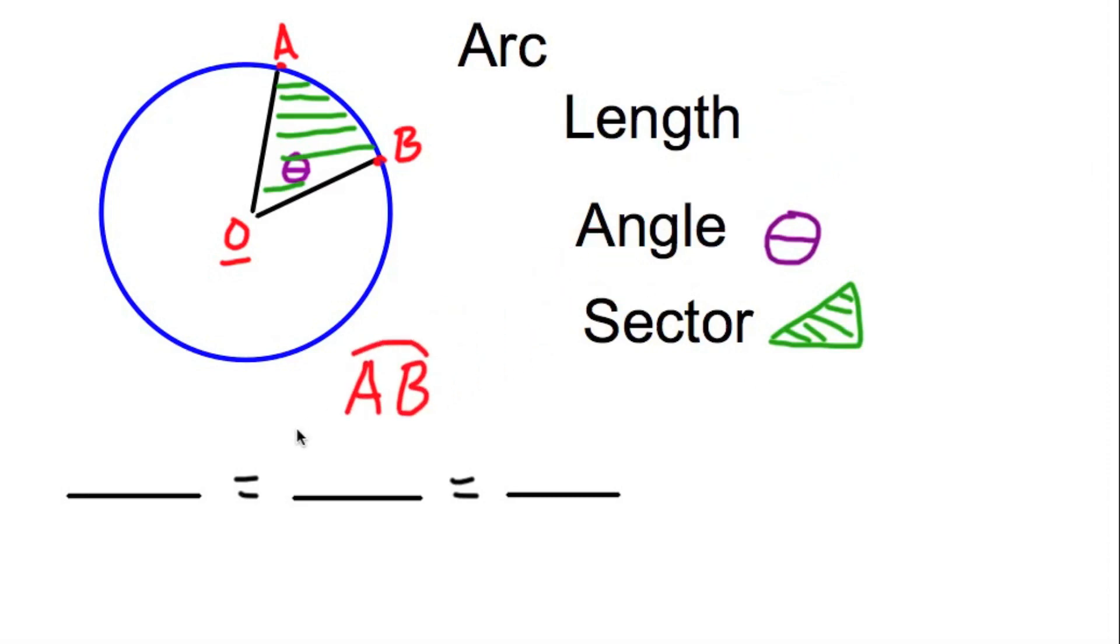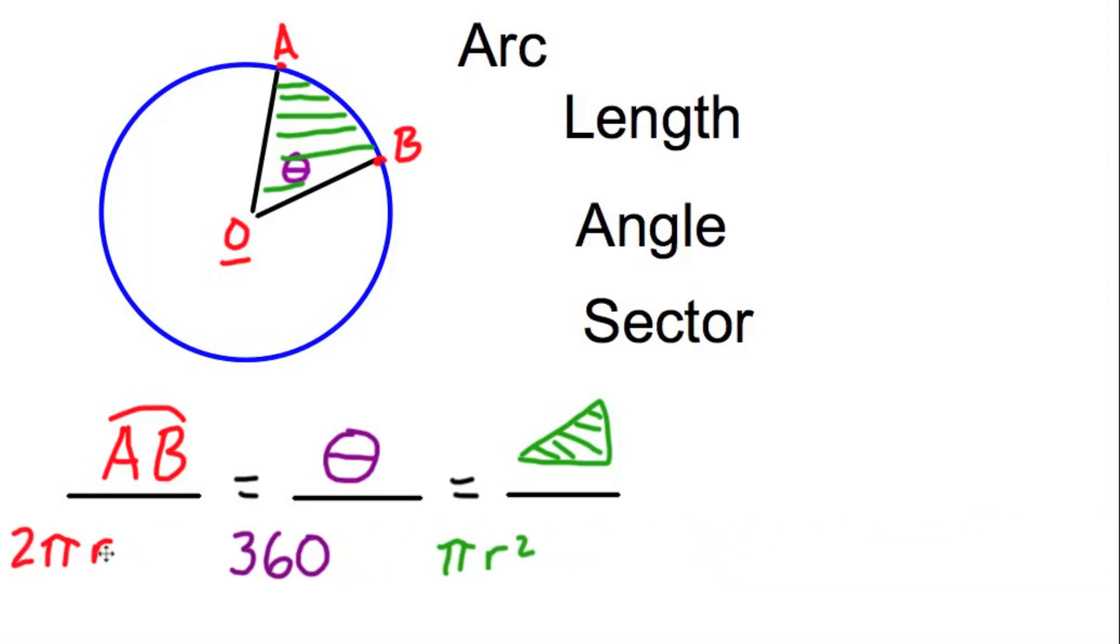So the arc length AB, the arc angle or the sector angle theta, usually they put in a variable not theta, and the sector area which they usually give with a shaded region are all in relationship to their parts from their circle. So the arc length divided by the circumference 2 pi r or pi d, theta over 360, and the sector area over pi r squared. Know this relationship. Memorize it.